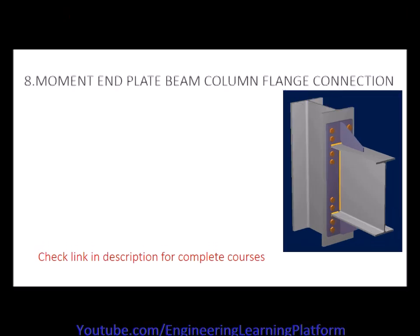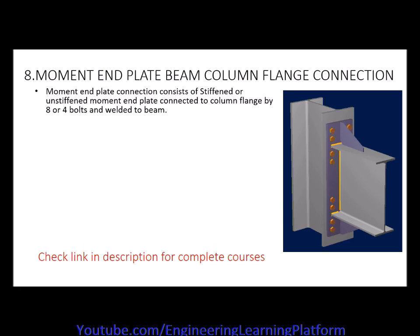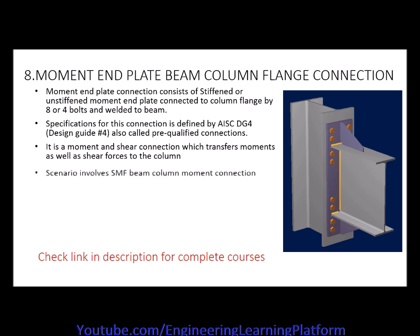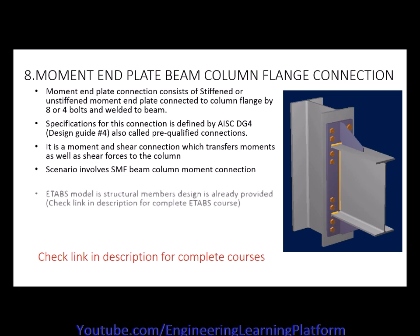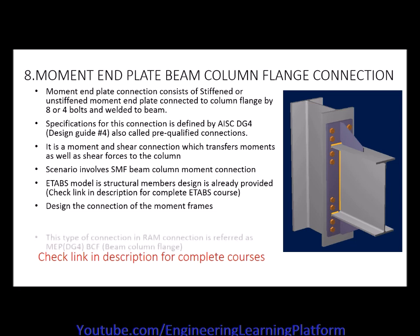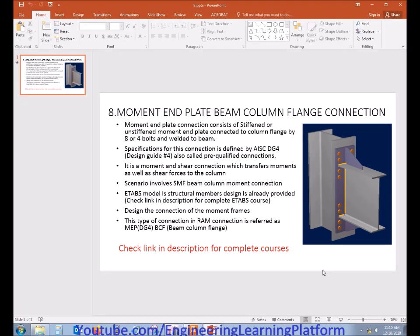In this lecture we will discuss moment end-plate beam-column flange connection. This connection consists of a stiffened or unstiffened moment end-plate with the column flange connected to the stiffener plate using eight or four bolts, which is welded to the beam. The specification is defined by AISC DG4 (Design Guide 4), also called a pre-qualified connection. It transfers both moment and shear force. The scenario involves an SMF beam-column moment connection, referred to as MEP DG4 in RAM Connection. The ETABS model is already provided for the design.